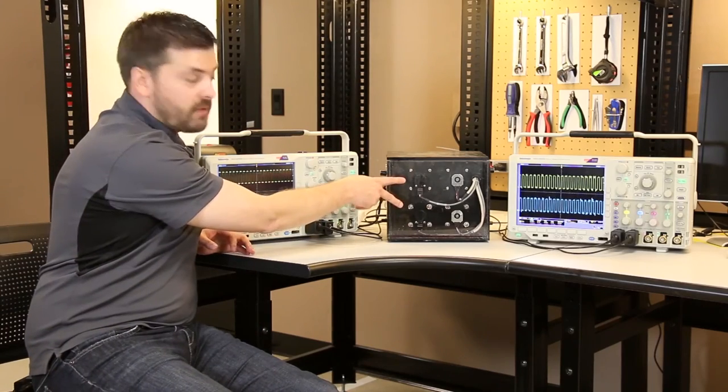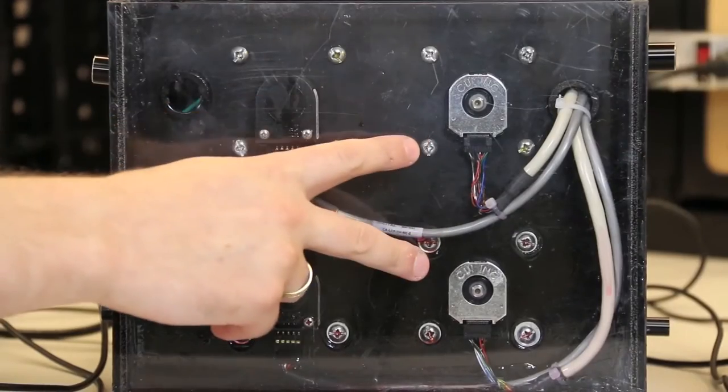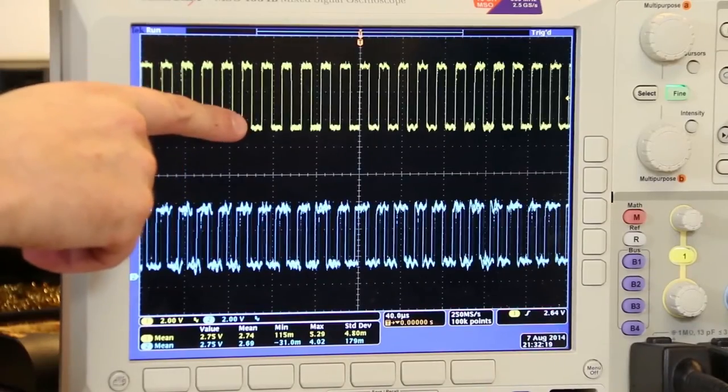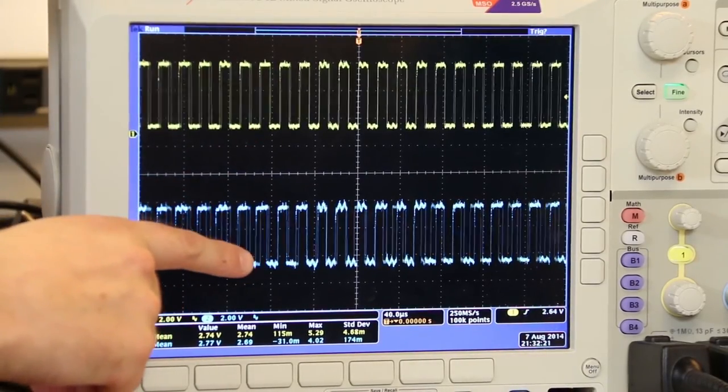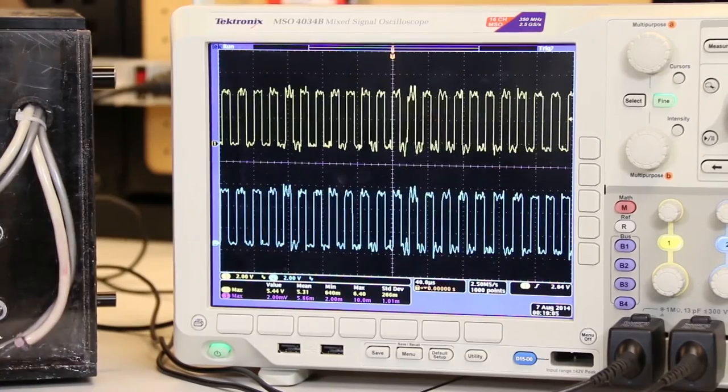We have two optical encoders set up and turning on motors here, and we have two AMT encoders set up on the far side. This scope is showing one of the output channels of the optical, and this is showing the output channels of the AMT encoder.